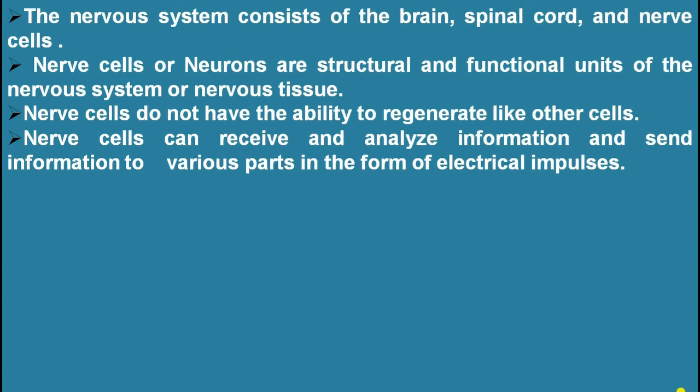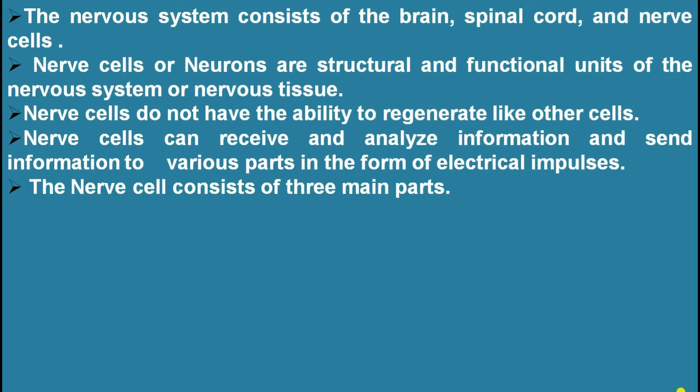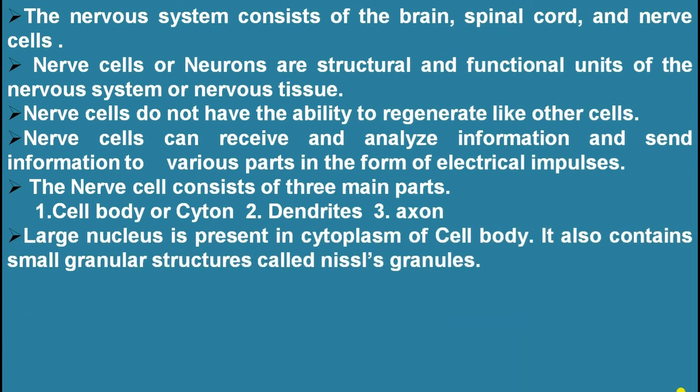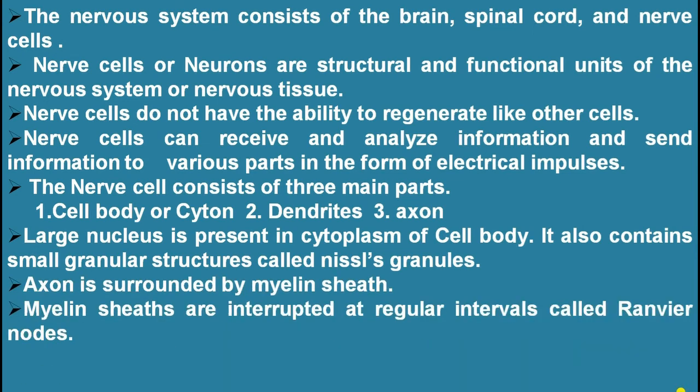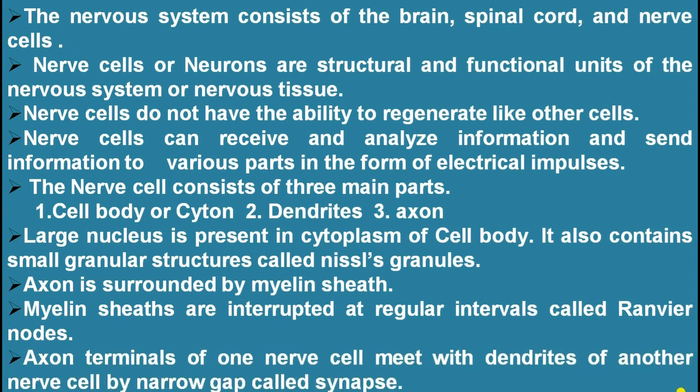The nerve cell consists of three main parts: one is cell body or cytome, second one is dendrites, third one is axon. Large nucleus is present in cytoplasm of cell body. It also contains small granular structures called Nissl granules. Axon is surrounded by myelin sheath. Myelin sheaths are interrupted at regular intervals called Ranvier nodes. Axon terminals of one nerve cell meet with dendrites of another nerve cell by a narrow gap called synapse.